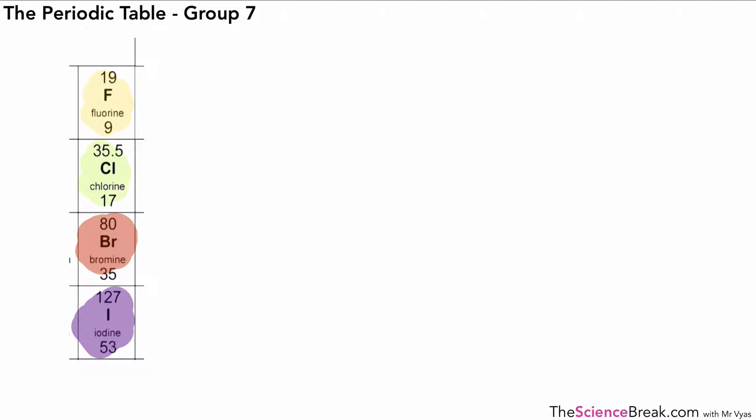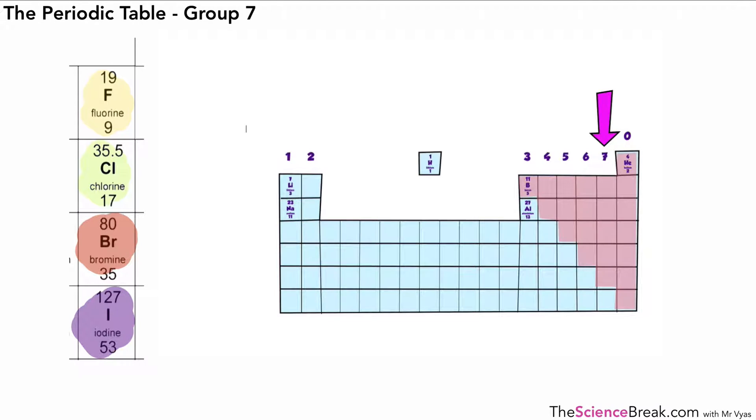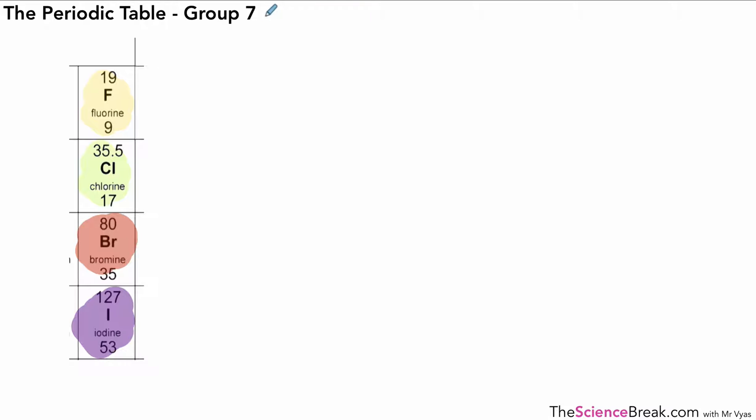Hello, today we're looking at another group of the periodic table, this is group 7, that's found here. And on the left hand side of the screen there you can see a list of some of the elements in group 7.